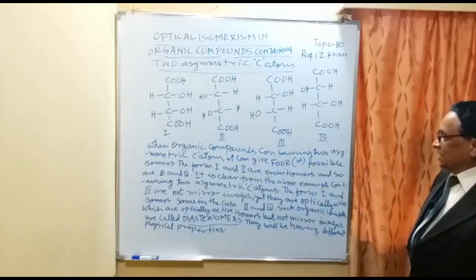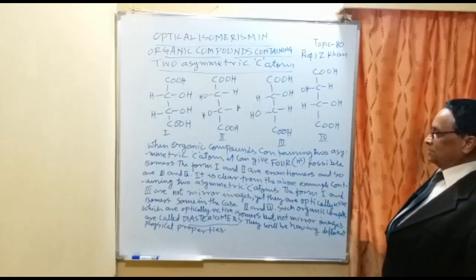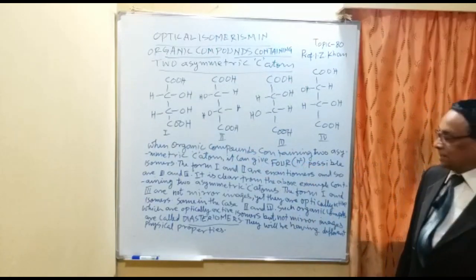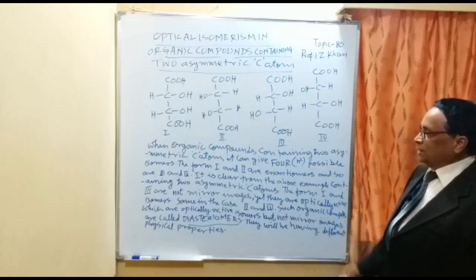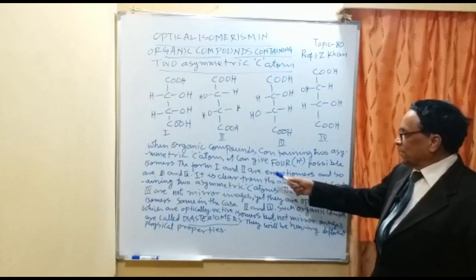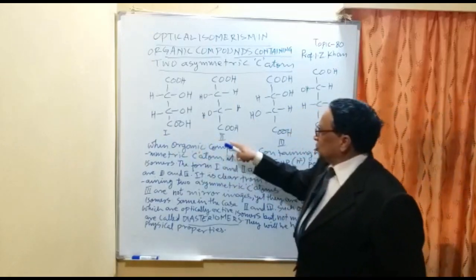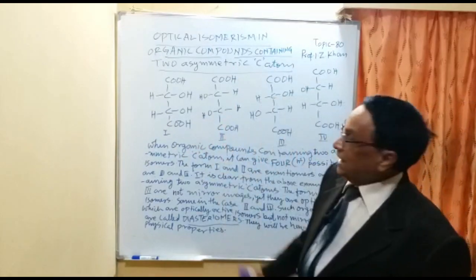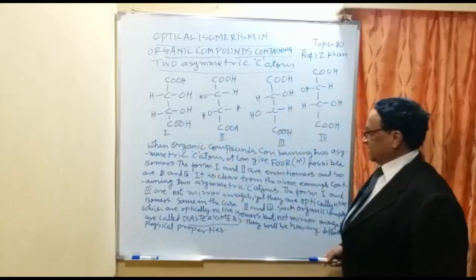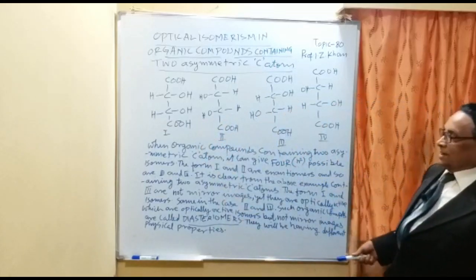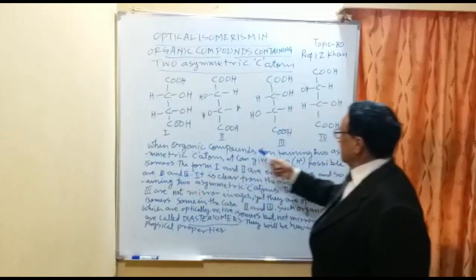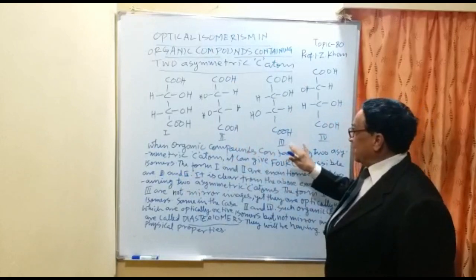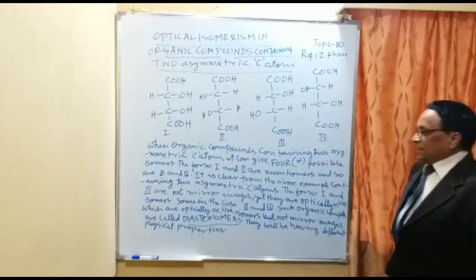For compounds containing two asymmetric carbon atoms, four possible isomers exist. Forms one and two are enantiomers because they are mirror images of each other and both are optically active. Similarly, forms three and four are also enantiomers of each other. So one and two are enantiomers, and three and four are enantiomers.